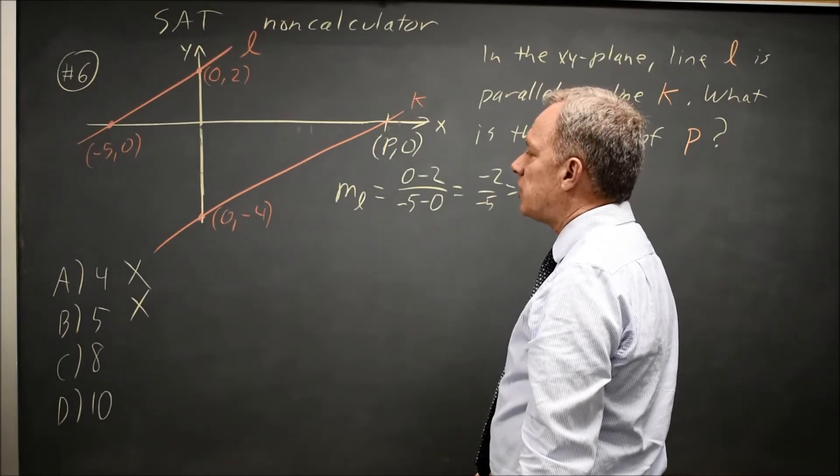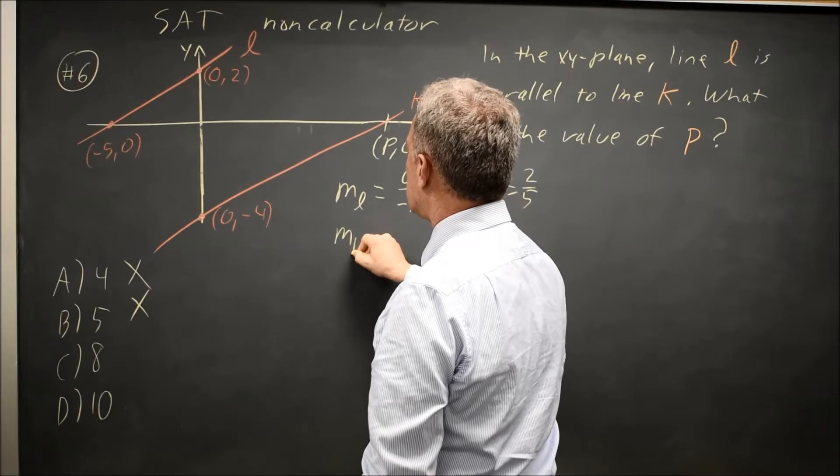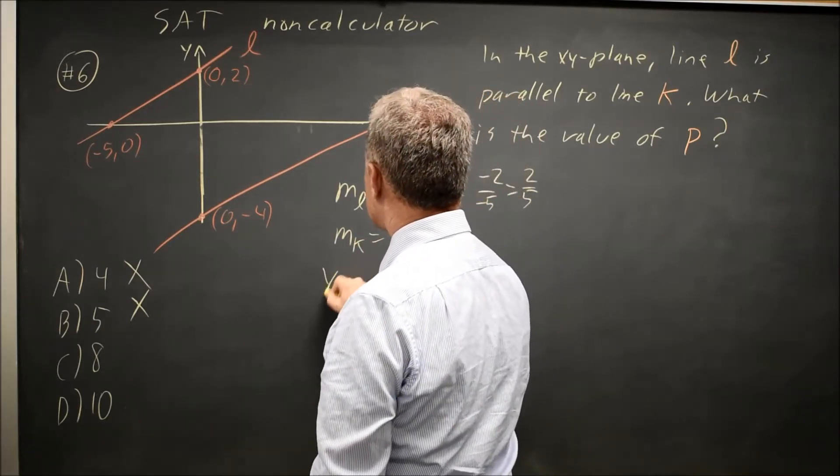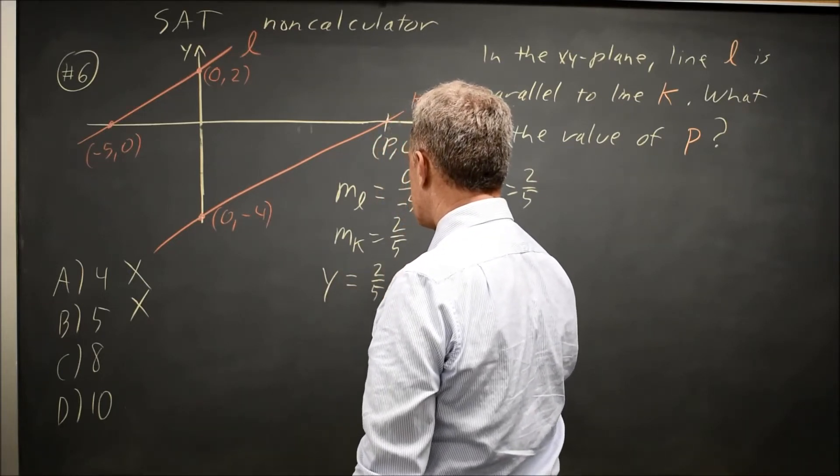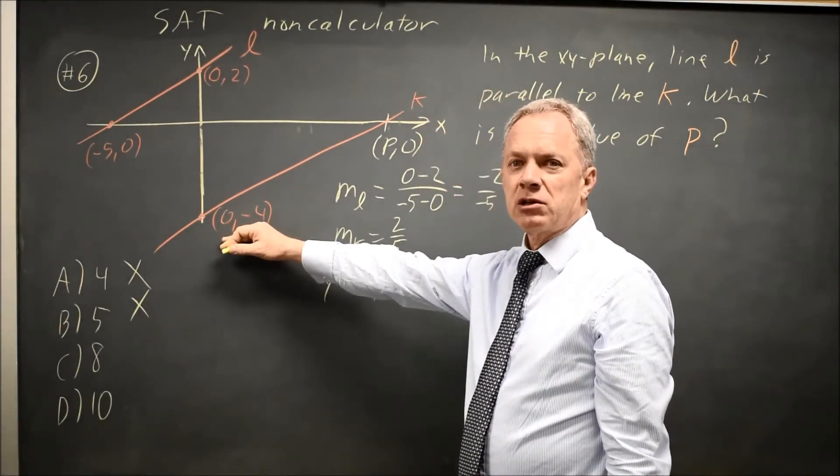So the slope of line K is also 2 over 5, because the lines are parallel. So line K has the equation y equals mx plus b, where m is 2 fifths, and I want to find b.